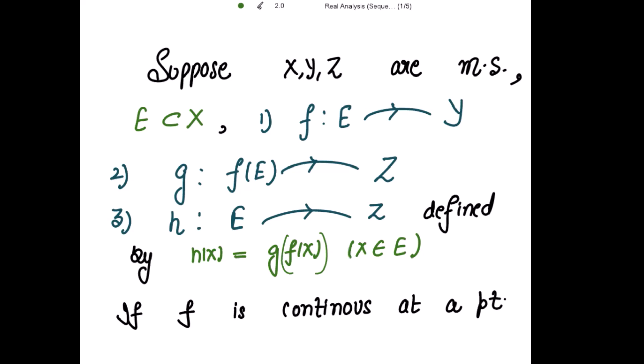First is f, a mapping from E into y where y is a metric space, and g maps the image of f into z. And h is a mapping from E into z which is defined by h(x) equal to g(f(x)) for x belonging to E.